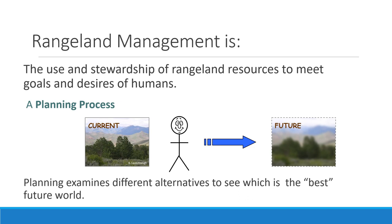What's interesting to me is that the actual rangeland resources have not changed in the 10,000 or tens of thousands of years that humans have been managing these lands. They're still mostly grasslands and shrublands with a sparse overstory of trees, and the plants are mostly naturalized or native plants. What has changed is the goals and desires of humans.